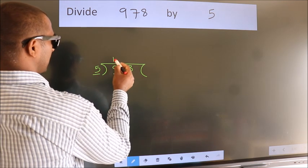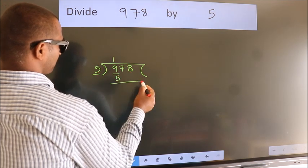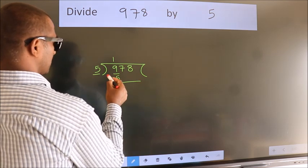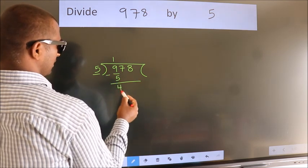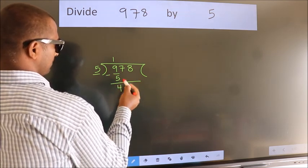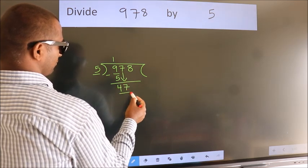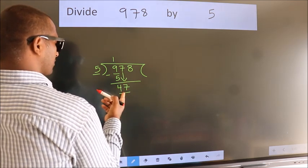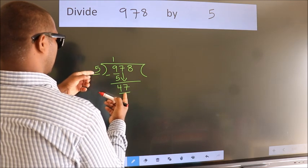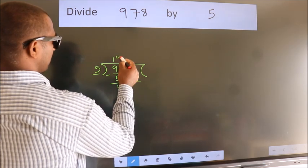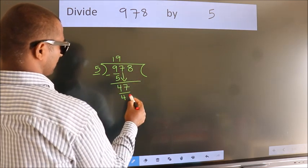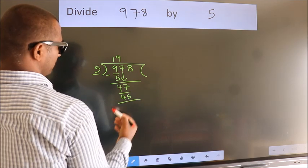is 5 once 5. Now we subtract and get 4. After this, bring down the beside number, so 7 comes down giving us 47. A number close to 47 in the 5 table is 5 nines 45. Now we subtract.